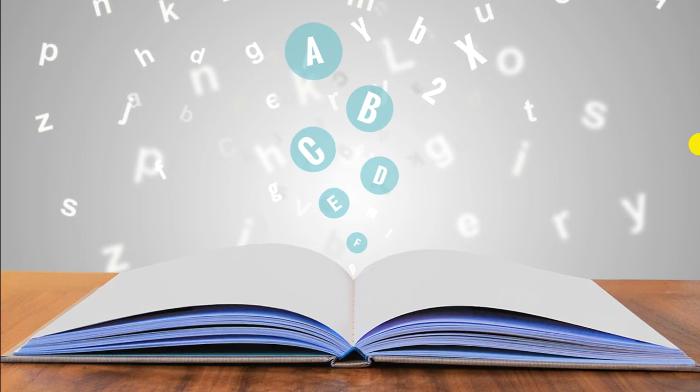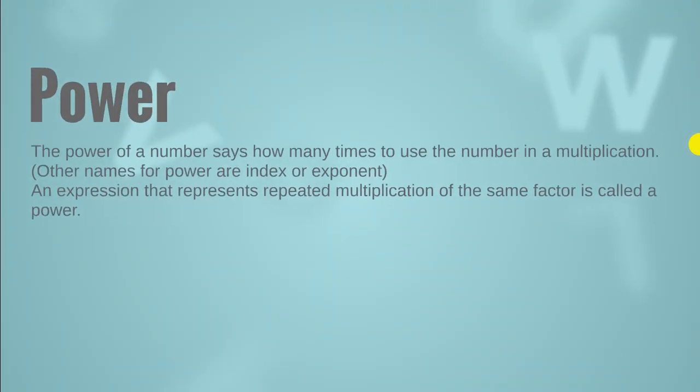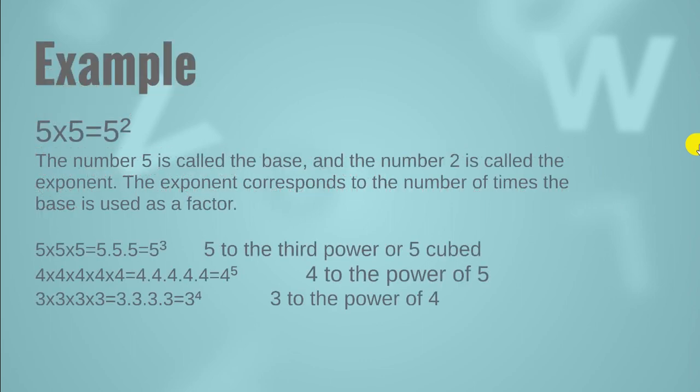So what is power? Let me define it. The power of a number says how many times to use the number in a multiplication, which means that an expression that represents repeated multiplication of the same factor is called a power. Other names for power are index or exponent. For example, 5 multiplied by 5 is equal to 5 raised to the power 2, or 5 squared.